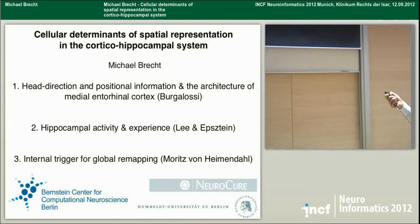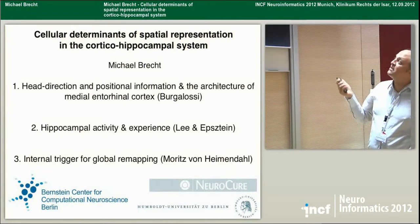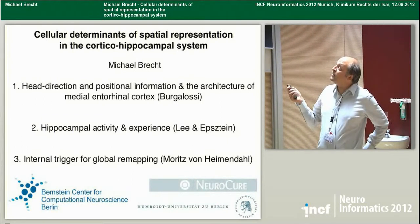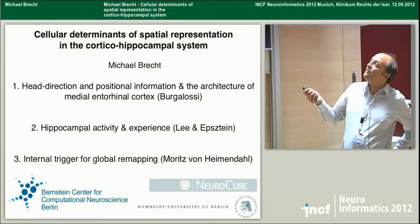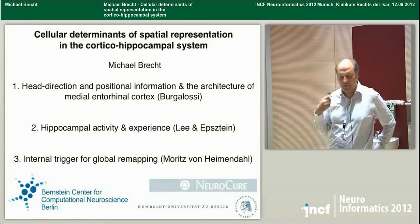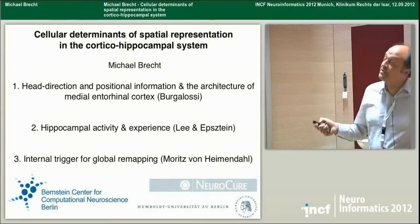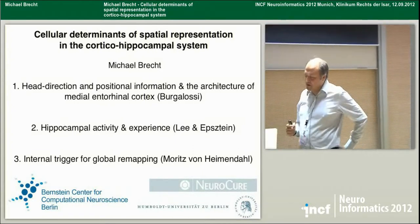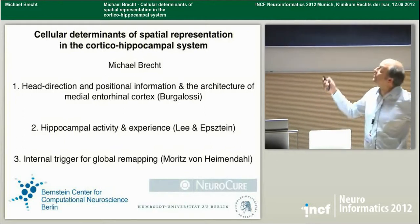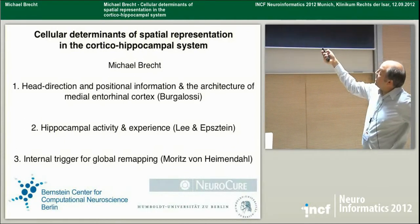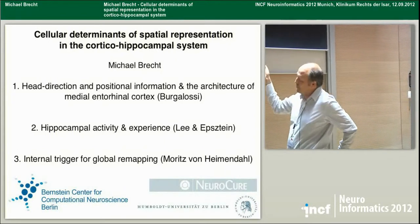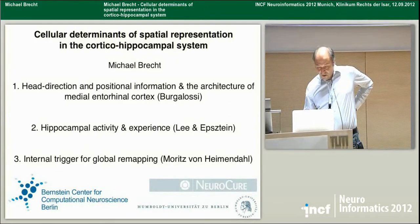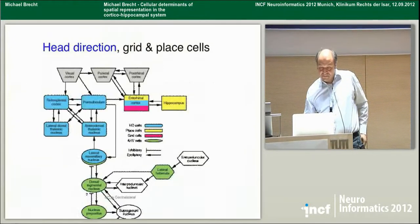In the first part, I will talk about structure-function relationships in the medial entorhinal cortex — this is work primarily pushed by Andrea Borgalossi, a postdoc in the lab. In the second and third part, I'll switch to the hippocampus, where I discuss place cell activity and silent cell activity and how it is affected by experience, and finally the possibility of an internal trigger for global remapping. These parts were done by Albert Lee and Charles Epstein, and currently work underway is being done by Moritz von Heimdahl, a postdoc who also has a poster here.